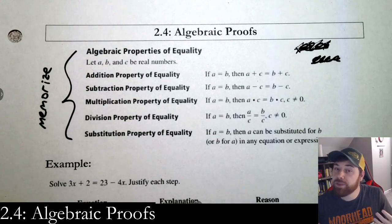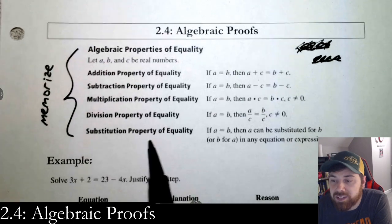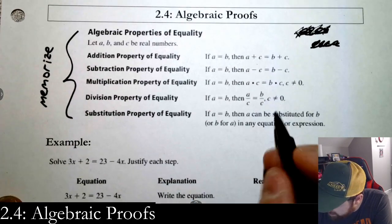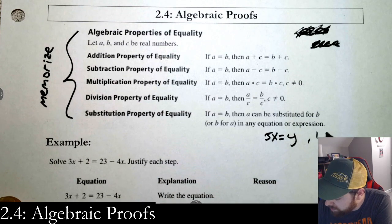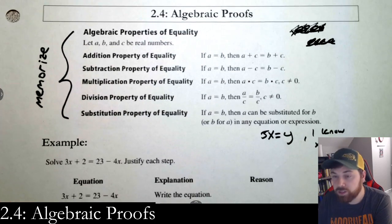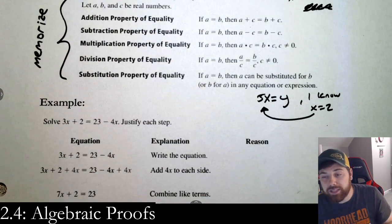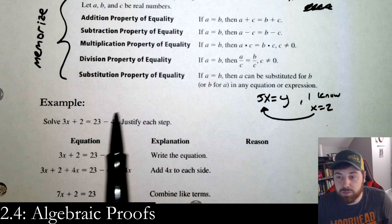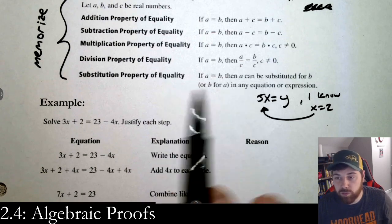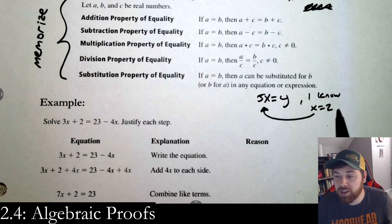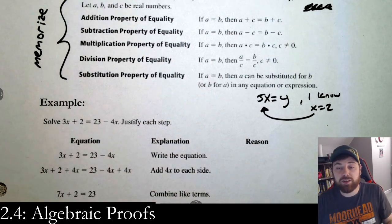The last one is the substitution property. So if I had 5x equals y, but I know that x is equal to 2, then I'm allowed to plug x in right there. The reason I can do that is by the substitution property — if these two are the same thing, then instead of using a I can use b, or vice versa, anywhere I see it. That's just plugging something in — substituting.